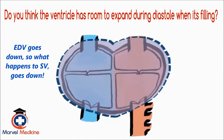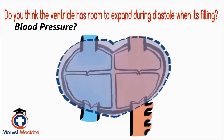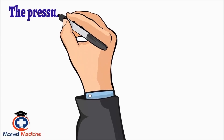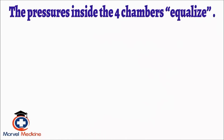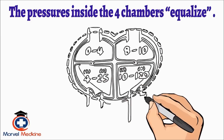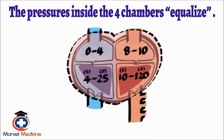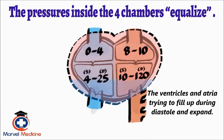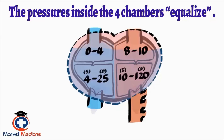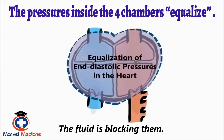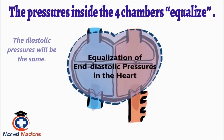Do you see how you can expand and extrapolate information? What do you think would happen to your blood pressure? Decrease. The other thing they love testing is the concept that the pressures inside the four chambers equalize. What does this mean? Imagine the heart with the fluid around it. Now imagine the ventricles and atria trying to fill up during diastole and expand. Notice that they really can't because the fluid is blocking them. Since that fluid is surrounding the heart all around, each chamber won't be filling differently — it will fill the same around, meaning the diastolic pressures will be the same. This is a huge giveaway.